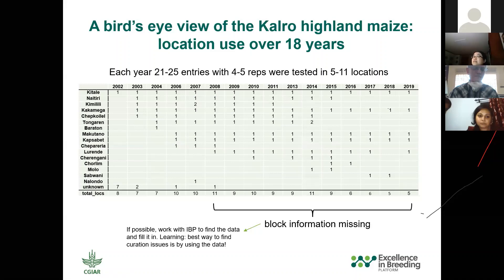We also looked at the usage patterns of the locations. All of these locations, to my understanding, represent the highland environment — they're not differentiated from each other by some treatment. There is a core set of locations that have been in use throughout the years. Summarizing the past 17 years of the program: on a given year, the program tests anywhere from 20 to 25 entries, four to five reps for each entry, in five to 11 locations. Most of the entries are tested in only one advanced trial.